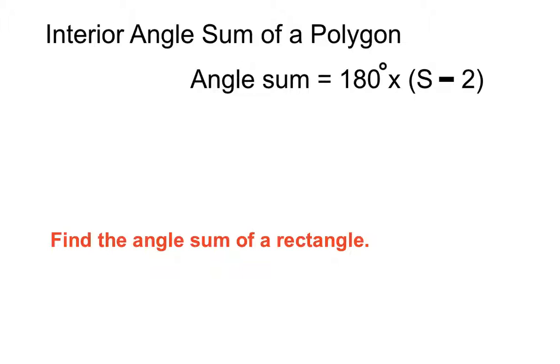So, find the angle sum of a rectangle. I think we might already know this one, but let's have a look. A rectangle there, how many sides has it got? It has four sides, we knew that. So that four, the number four, can be substituted into our formula up the top here, where the s is in the bracket.